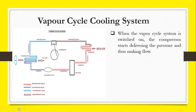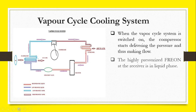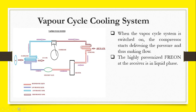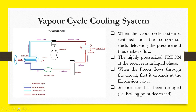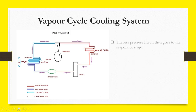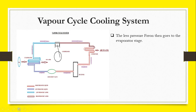We will start the Vapor Cycle Cooling System by switching on. The compressor starts delivering the pressure and thus making flow. The highly pressurized Freon at the receiver is in liquid phase only. When the Freon flows through the circuit, first it expands at the expansion valve, so the pressure has been dropped.